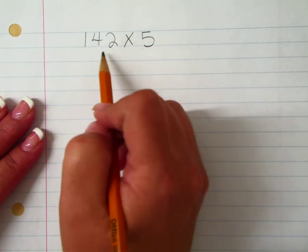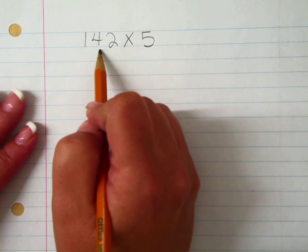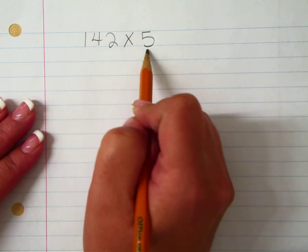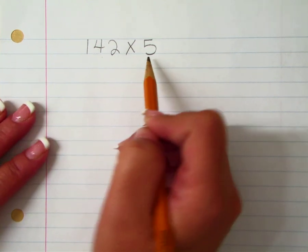Okay, today we're going to multiply a multi-digit number by a one digit using partial products.